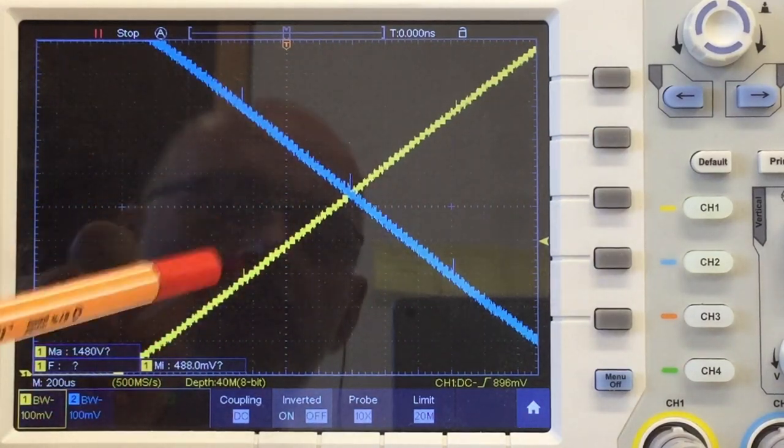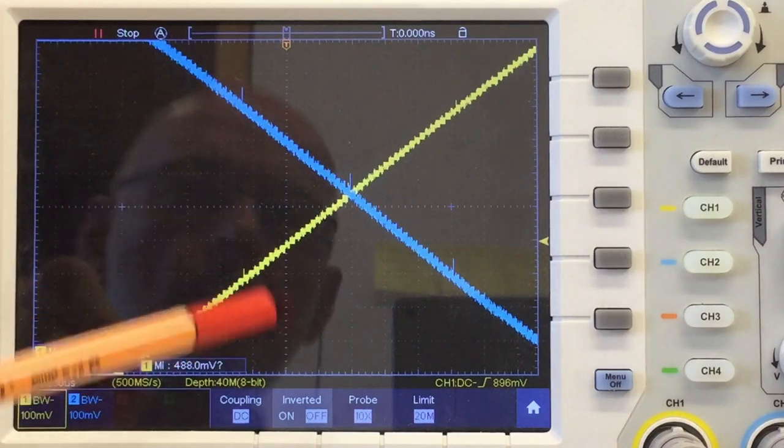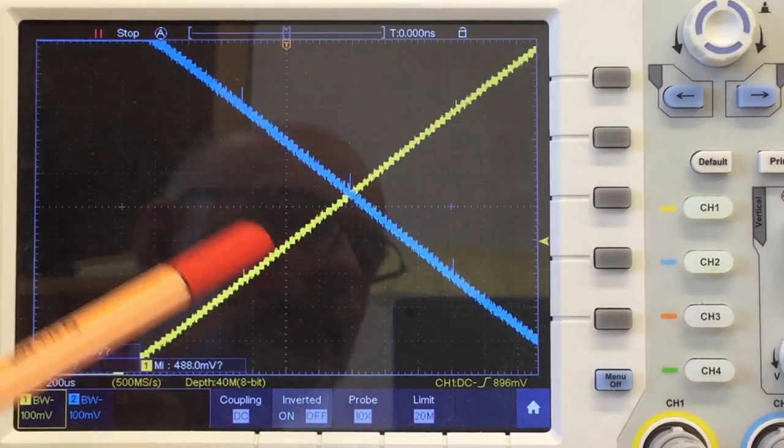But I'm down here to 200 microseconds per division on the timescale and to 100 millivolts per division here on the vertical scale. So it looks very nice. We will improve on that in the second part of the video. But for a start, wow.